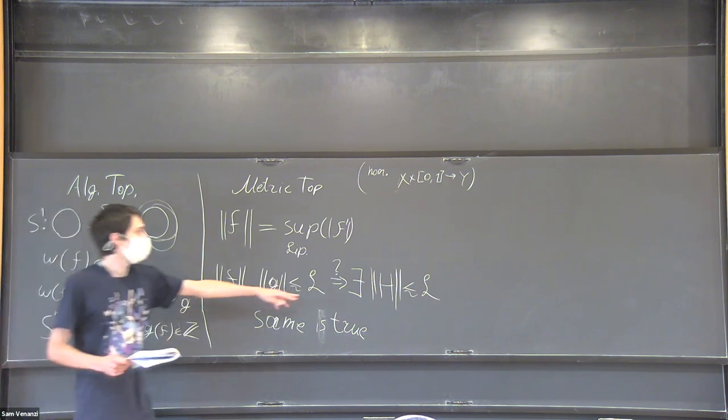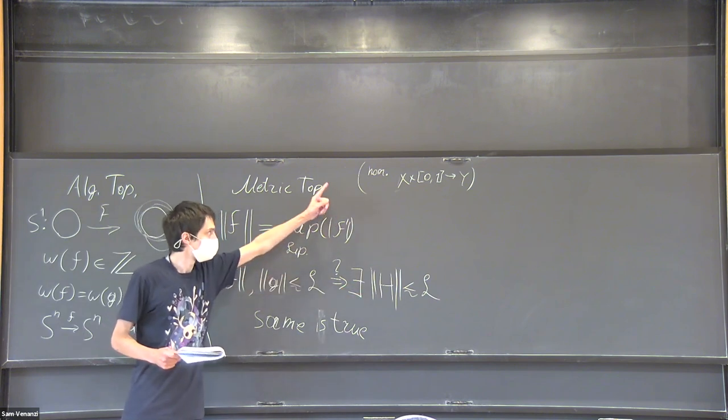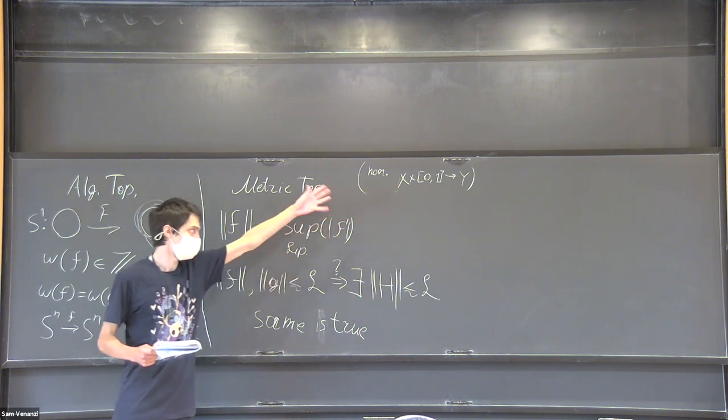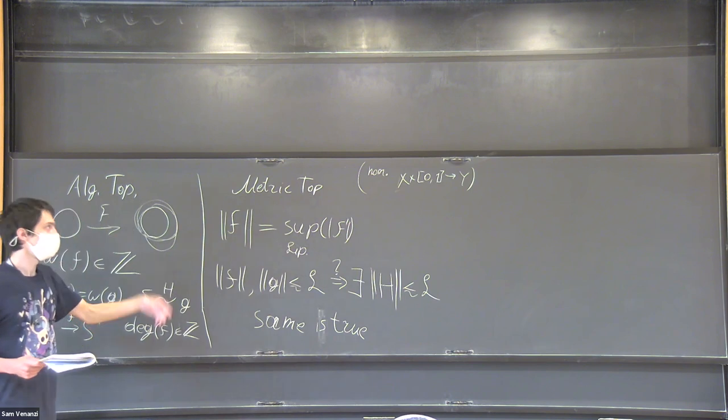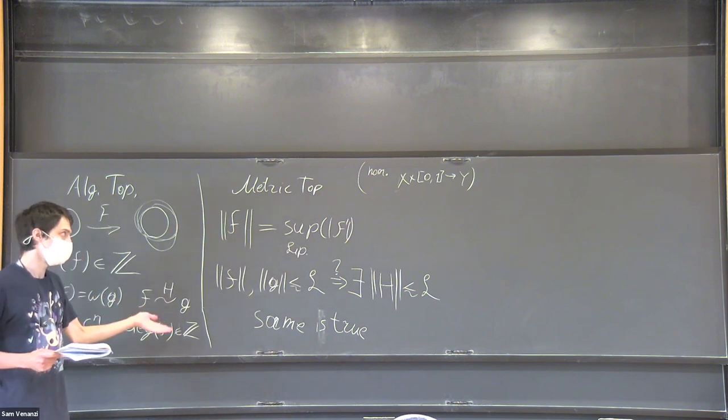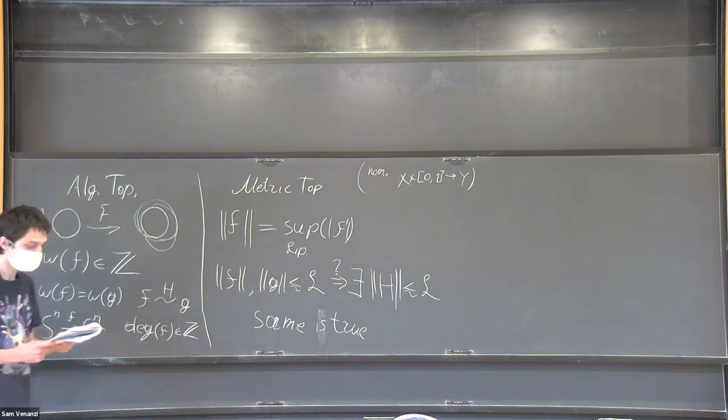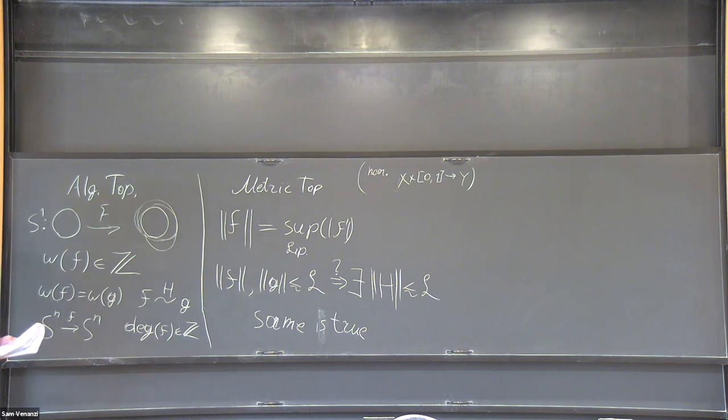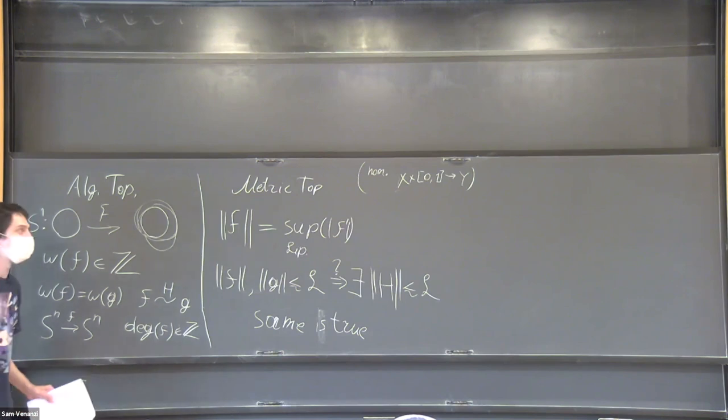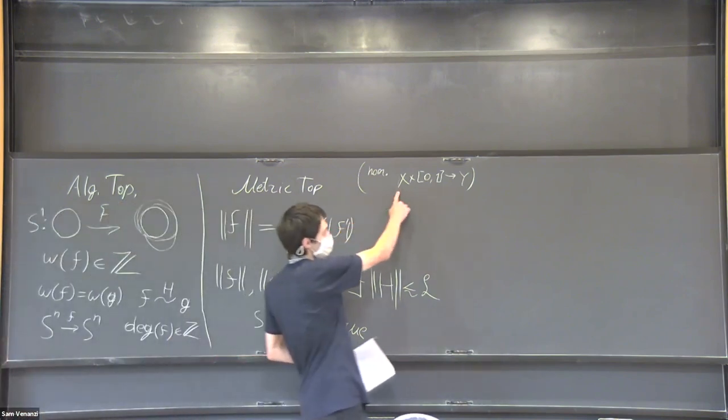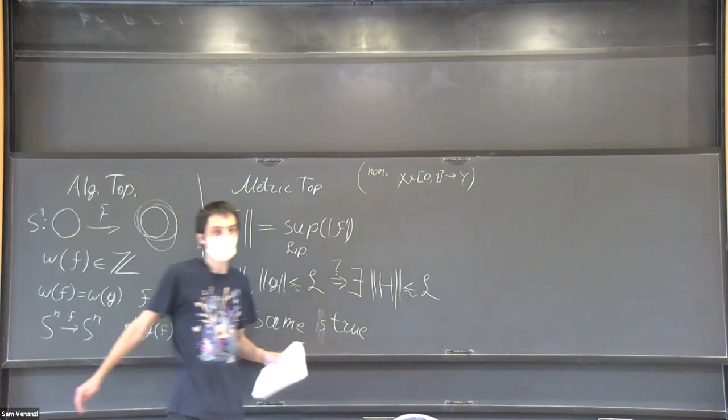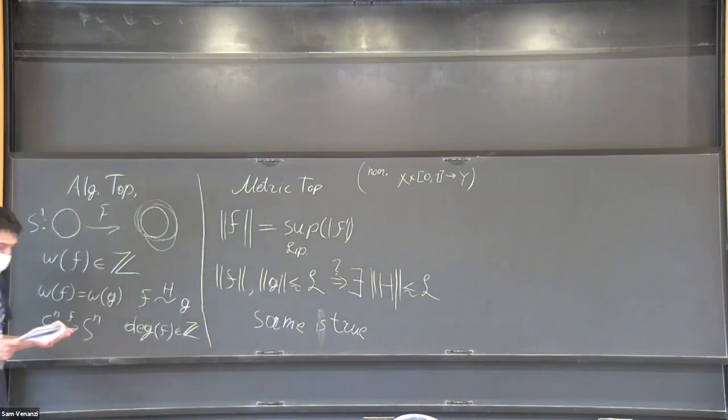But yes, here I just take the Lipschitz constant of this kind of mapping—S¹ cross unit interval to unit sphere cross unit interval. So it's space-time? Yeah, space-time. It's not Minkowski space-time, but yeah, this is the space and this is the time. You control both? Yeah.